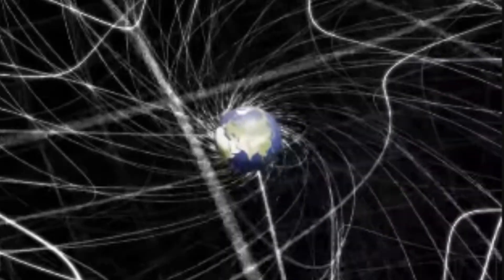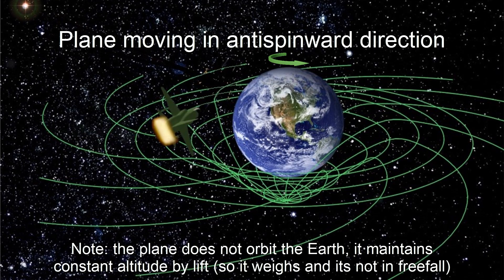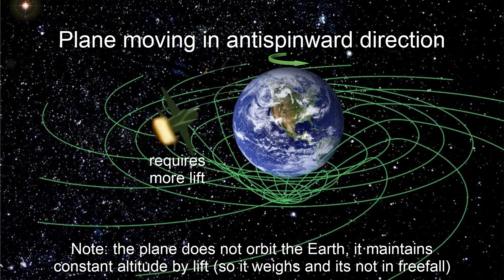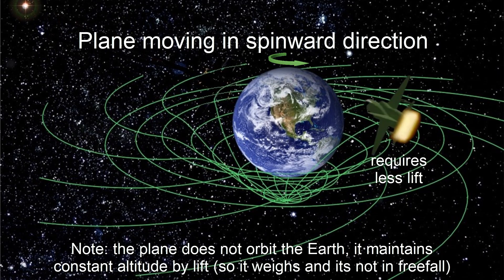Another consequence of gravito-electromagnetism is that, for an object constrained in an equatorial Earth's orbit but not in freefall, it weighs more if orbiting anti-spinward and less if orbiting spinward. The spinning of the Earth generates itself a gravitomagnetic field,